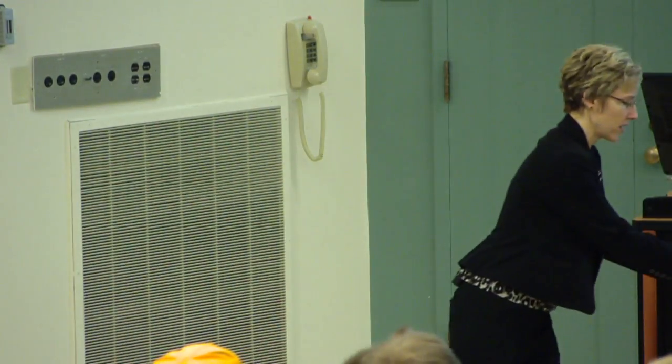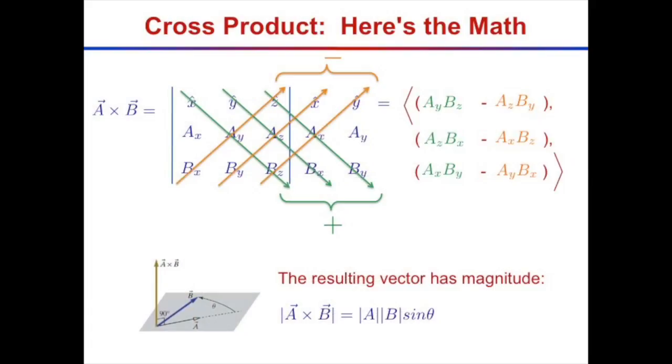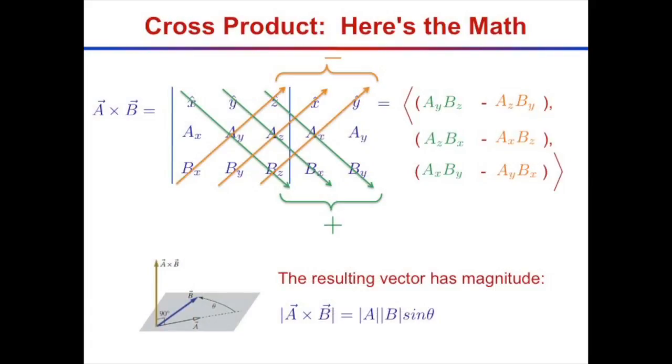Now we have another way to see that the cross product of two parallel vectors is zero. The farther apart the two vectors point, the larger sine theta gets. When they get closer together, sine theta goes down, and when theta is zero, sine of zero is zero. So when they coincide, the cross product is zero.